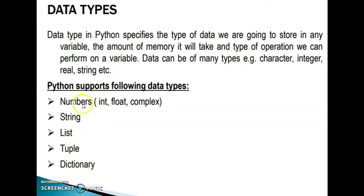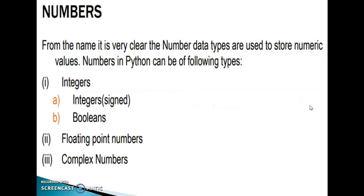In numbers, you can identify int, float, and complex. From the name, it is very clear that number data types are used to store numeric values. Numbers in Python can be of the following types: integers, floating point numbers, and complex numbers. In integers, we can also identify signed integers and booleans.